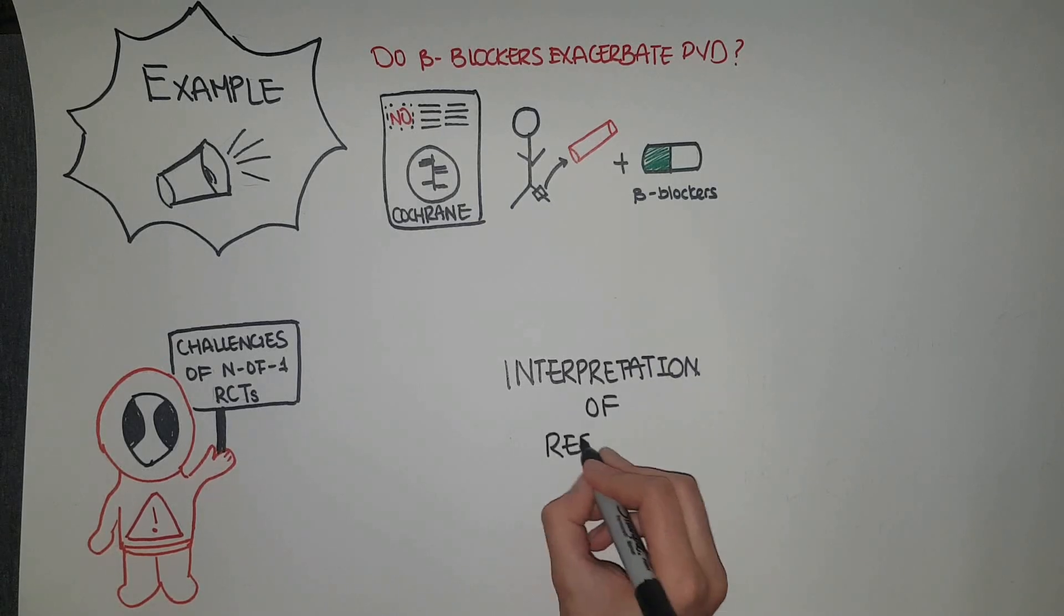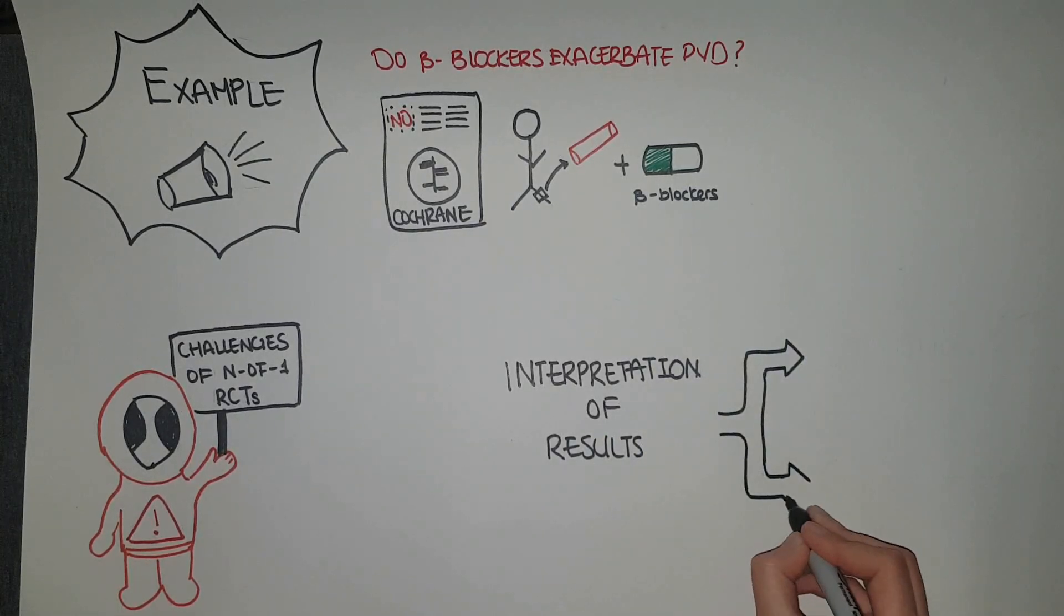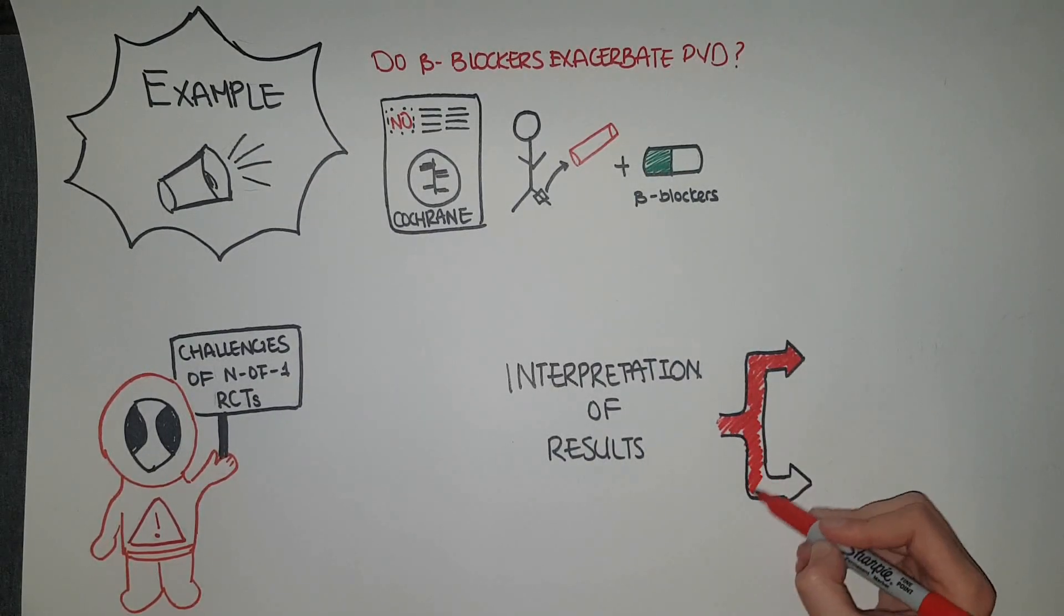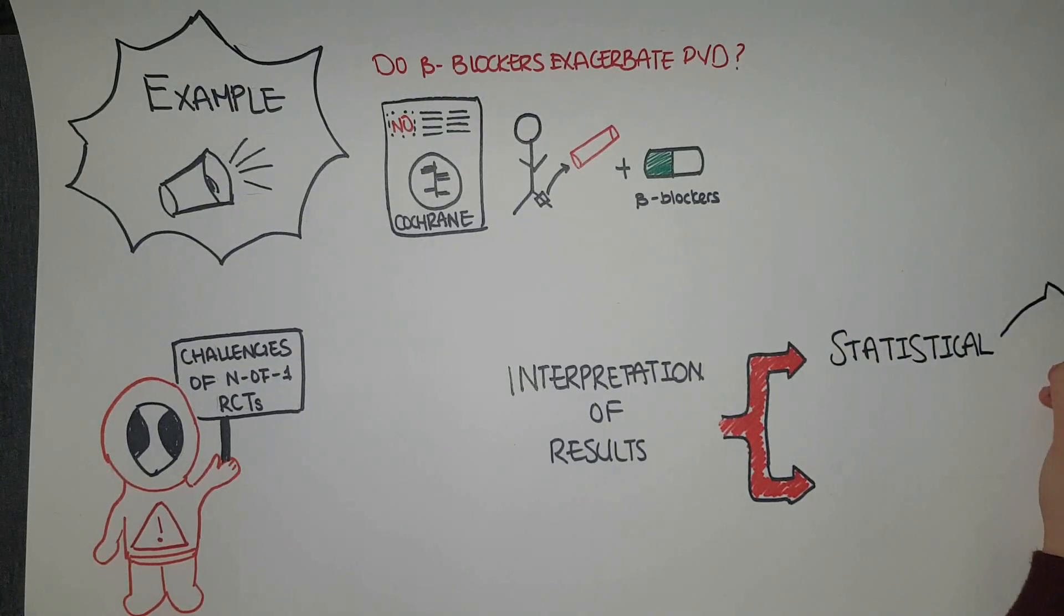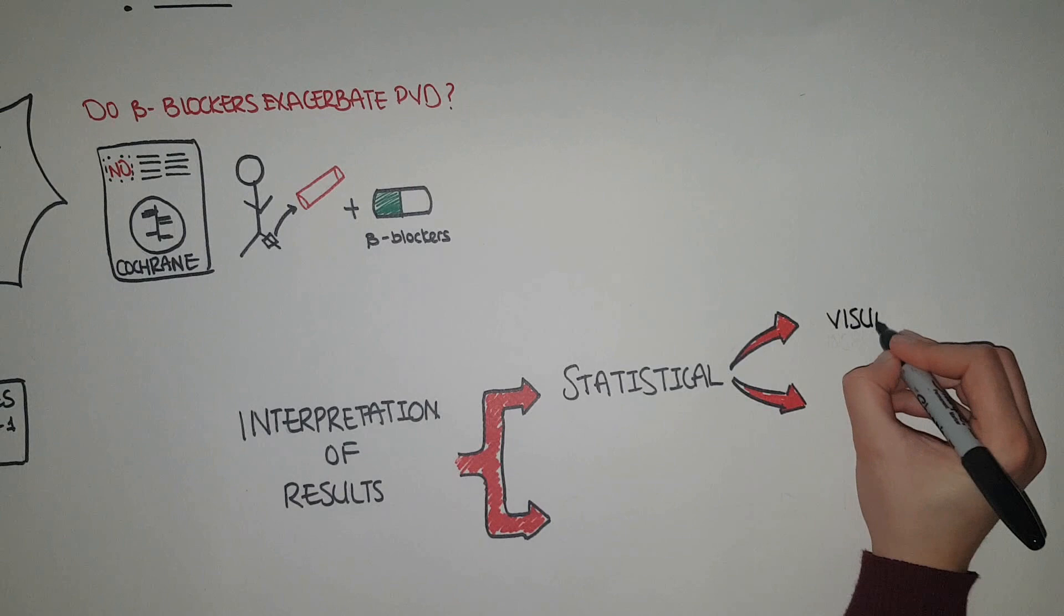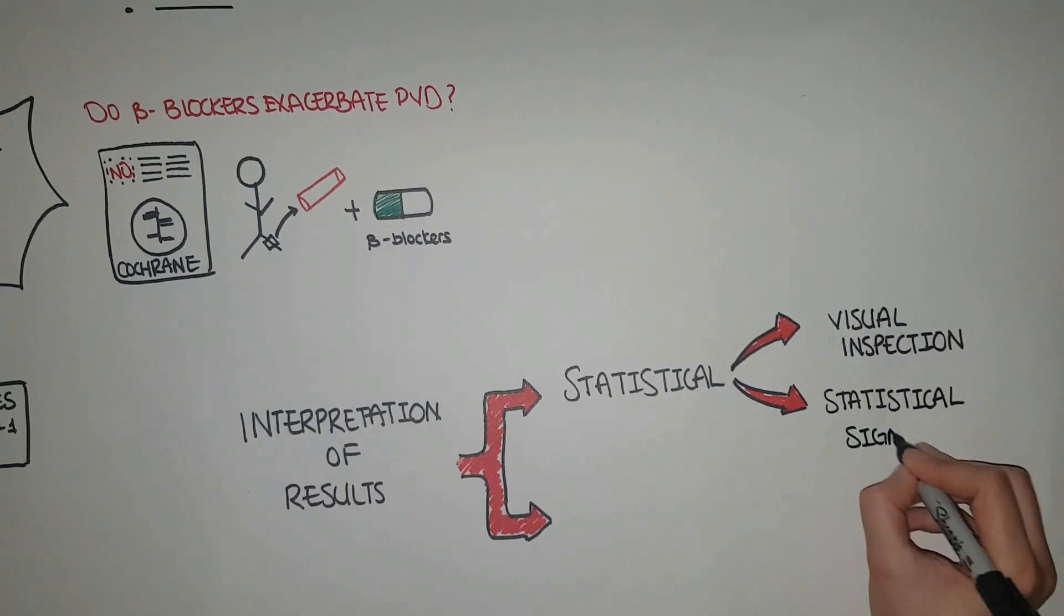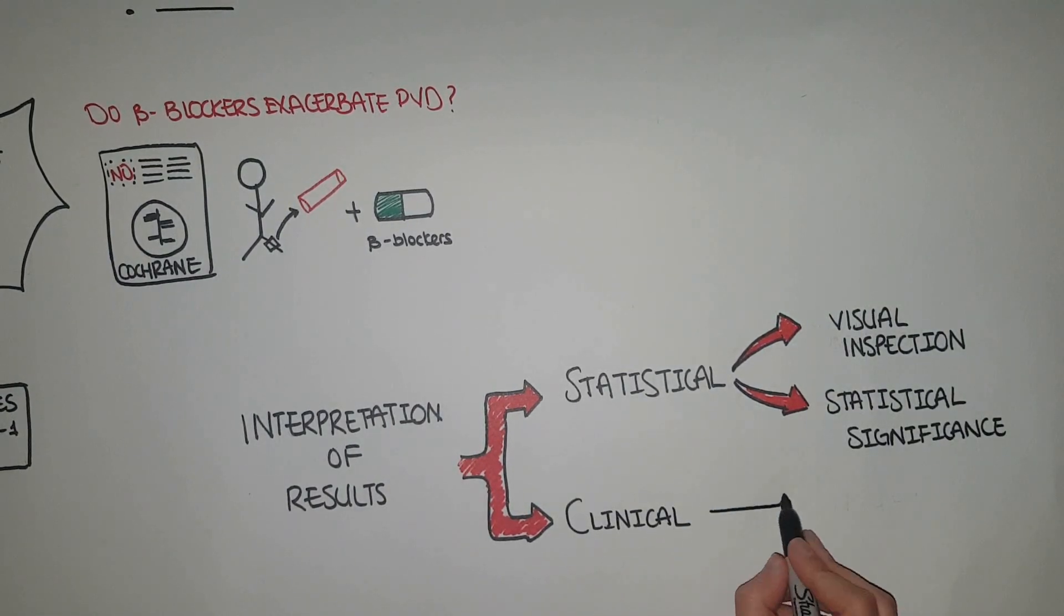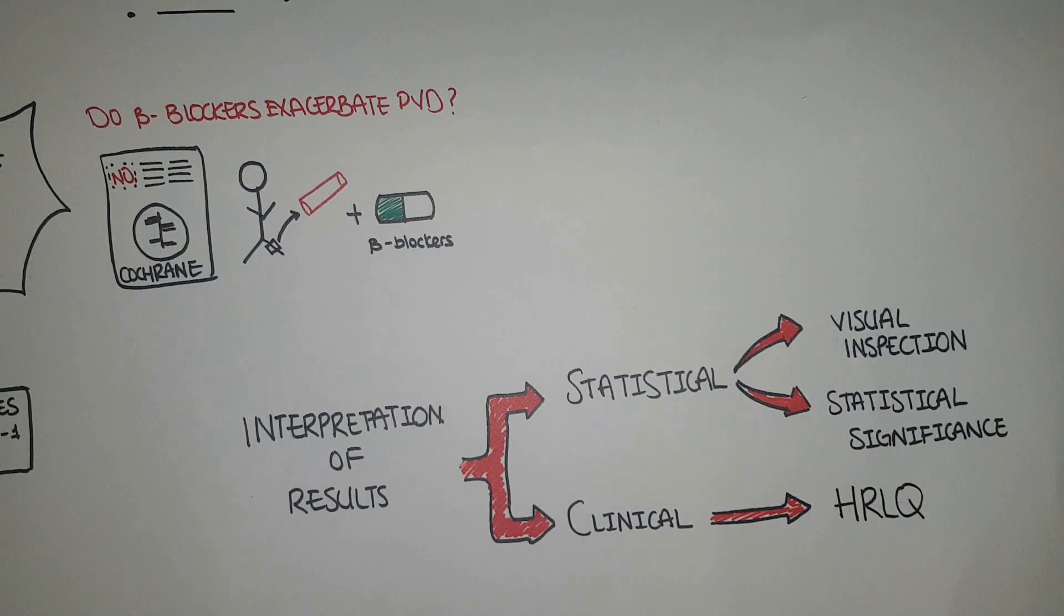So, say you conducted an N-of-1 randomized control trial. What do you do with the results you have? Interpretation of trial results can encompass both statistical and clinical aspects. One category of statistical interpretation is visual inspection, which involves graphical display of outcome assessments over time and in relation to the treatment being received.